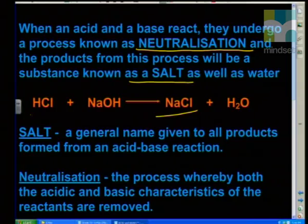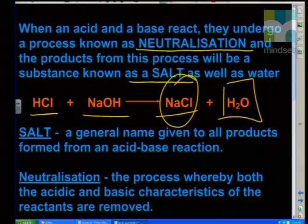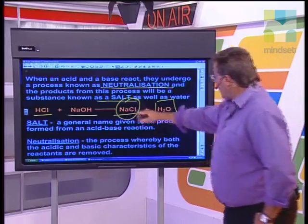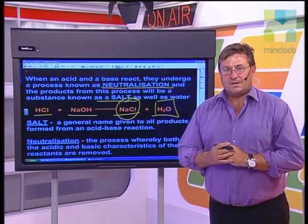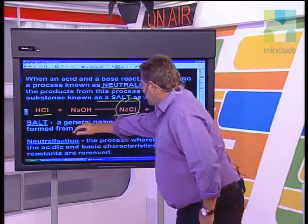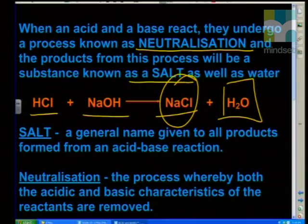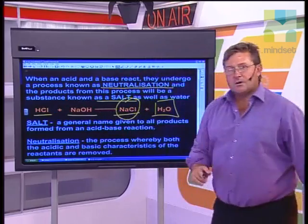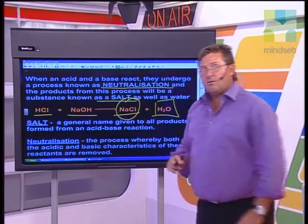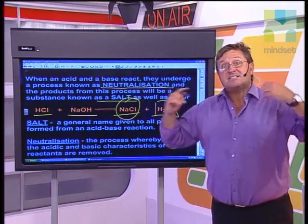We can make sodium chloride by reacting the acid, hydrochloric acid, and the base, sodium hydroxide, and we will form sodium chloride. We also get another residue which is simply water being given off. NaCl, sodium chloride, is an example of a salt. A salt is a general name given to all products formed from an acid-base reaction. It's just by coincidence that hydrochloric acid plus sodium hydroxide produces sodium chloride, which is what we define as table salt.